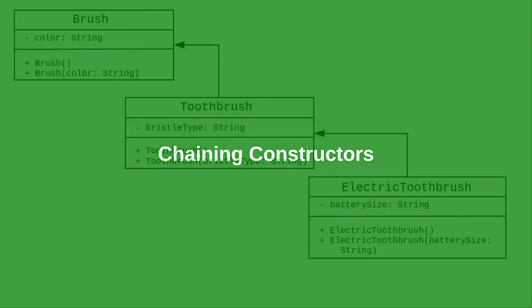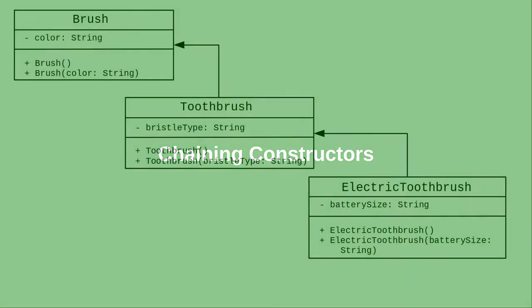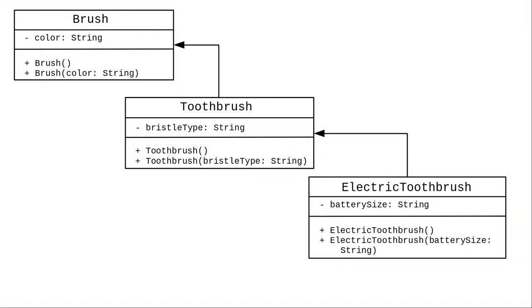In the preceding video, we talked about using super to call the superclass constructor. Consider this chain of classes and subclasses where brush is the parent class for toothbrush, and toothbrush is the parent class for electric toothbrush.